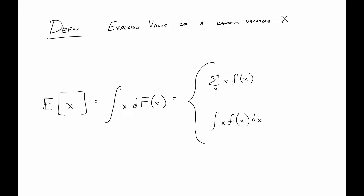Most of what we're going to do in this chapter is define a bunch of things. We start with the most basic definition: the expected value of some random variable X. This is also called the mean, and we'll also see that this is the first moment.